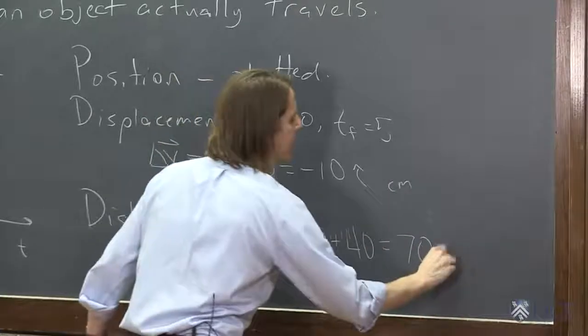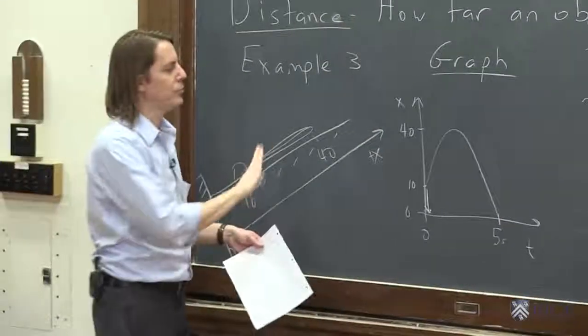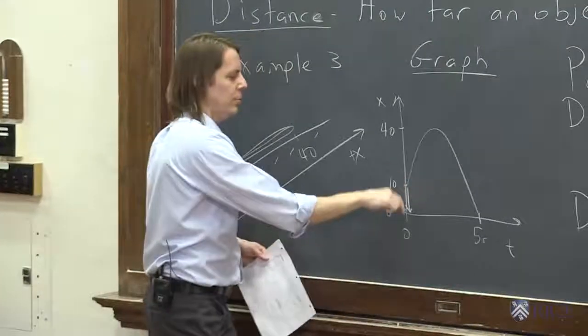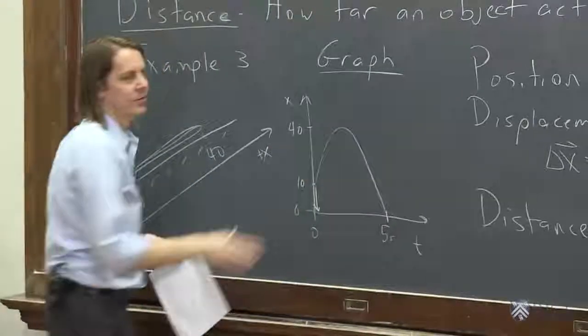And if we want to do units, they're both in centimeters. So it's the same path, or it's the same trip. It's the same experiment. But you can see that the displacement was much smaller. It was small and negative, whereas the distance is always positive. It's just how far it went.